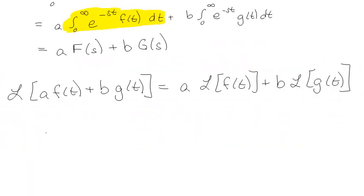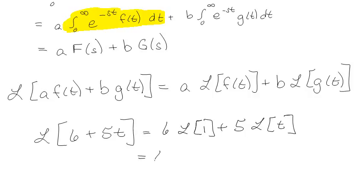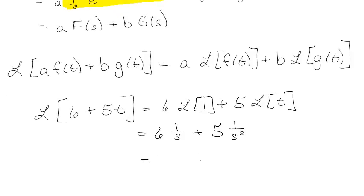So if I had something where I was trying to find the Laplace transform of 6 + 5t, then I could say 6 times the Laplace transform of 1, and then 5 times the Laplace transform of t. I know the Laplace transform of 1 is 1/s, and the Laplace transform of t is 1/s². So that allows me to solve a Laplace transform rather straightforwardly, rather quickly, without too much fuss, specifically because it's linear.